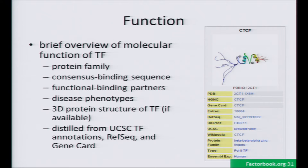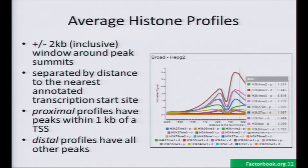One part of that page is about the function of the TF, distilled from a bunch of public websites. When possible, we have the protein family, consensus sequence, a multilevel consensus sequence, and if you have a PDB image, we try to pull that in for you. In addition to that, we have average histone profiles. We take a 2KB window around every summit, every peak, and compute the average histone signal. These are split into proximal and distal sites — like the encyclopedia — so you can get, for instance, proximal H3K4me2 or distal H3K4me3, color-coded individually in an interactive JavaScript chart.